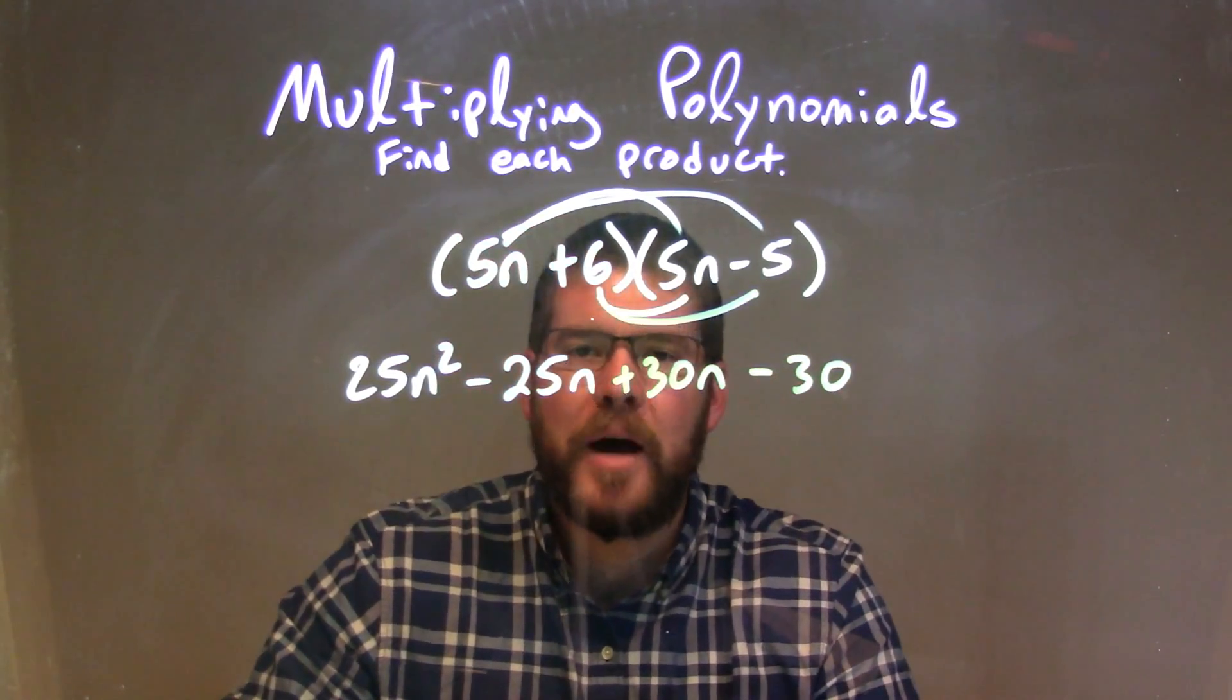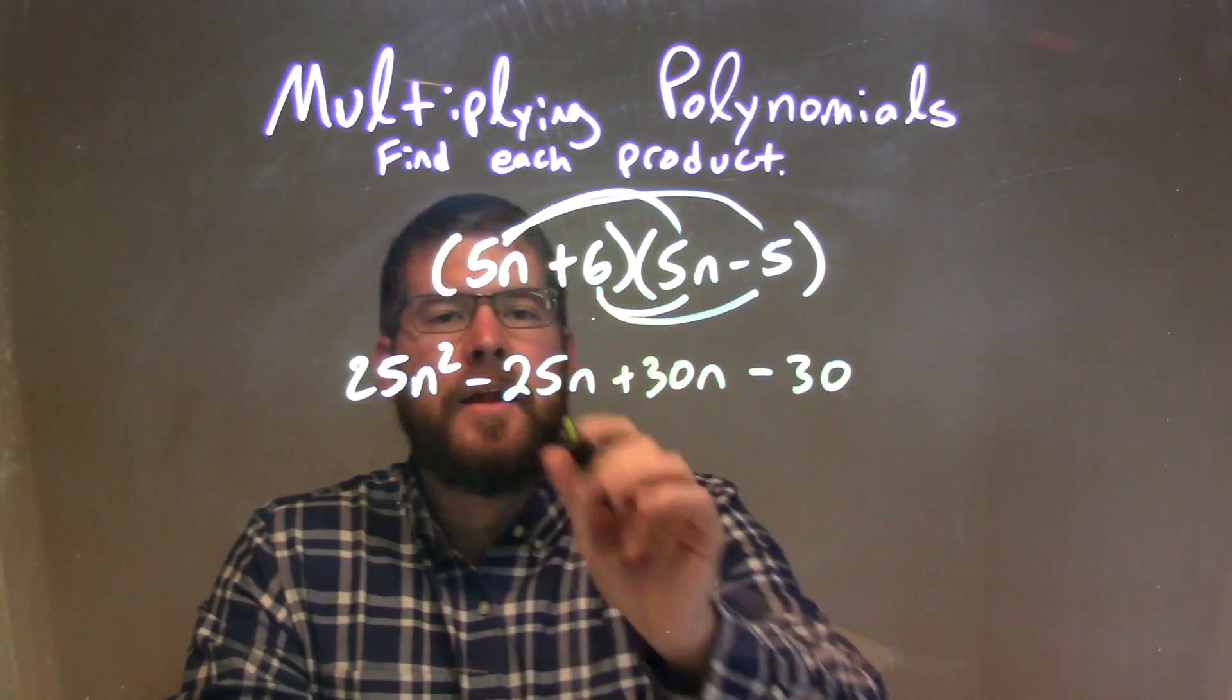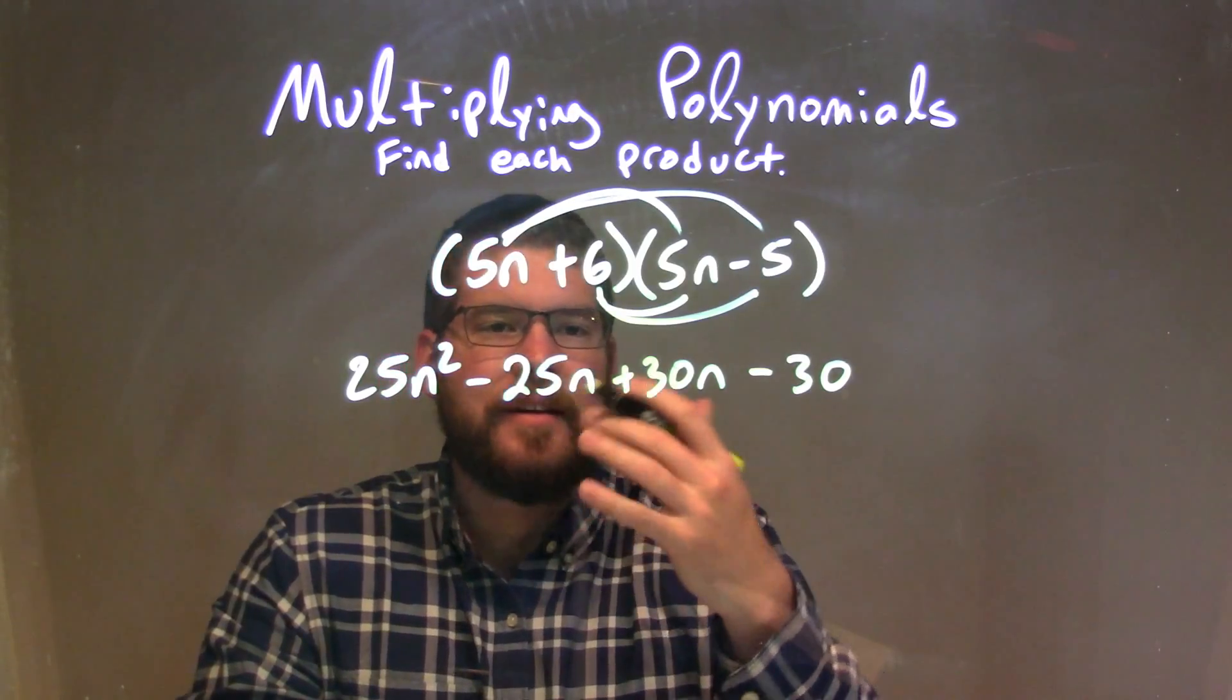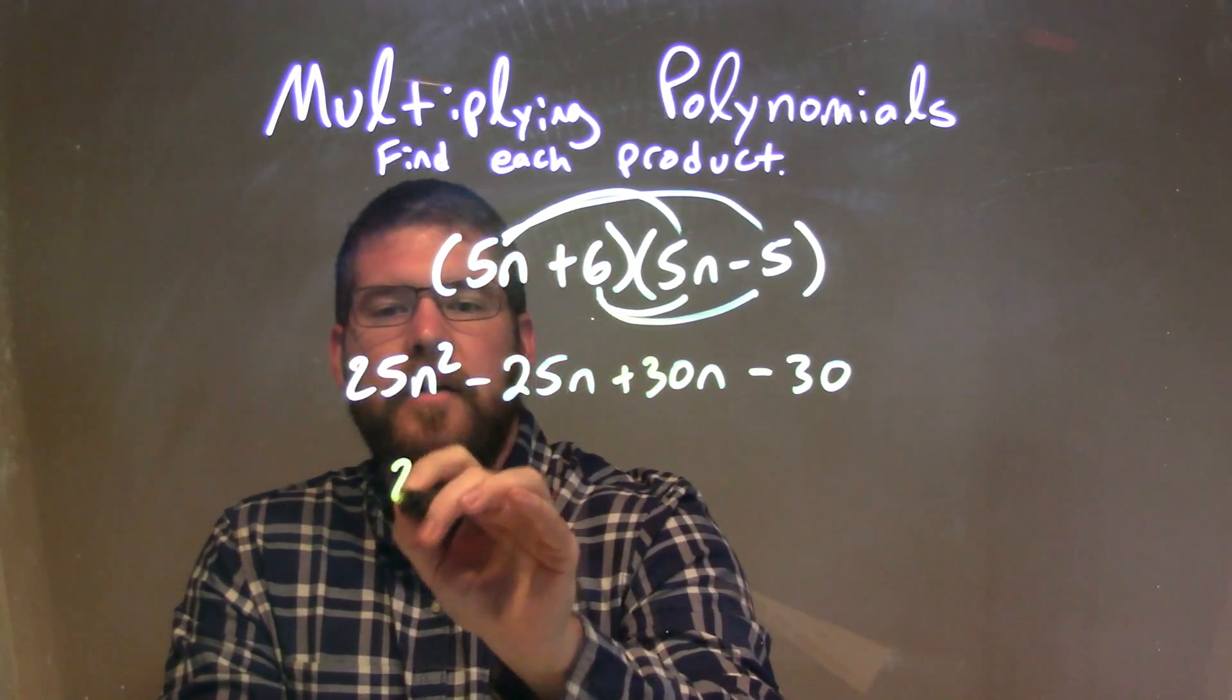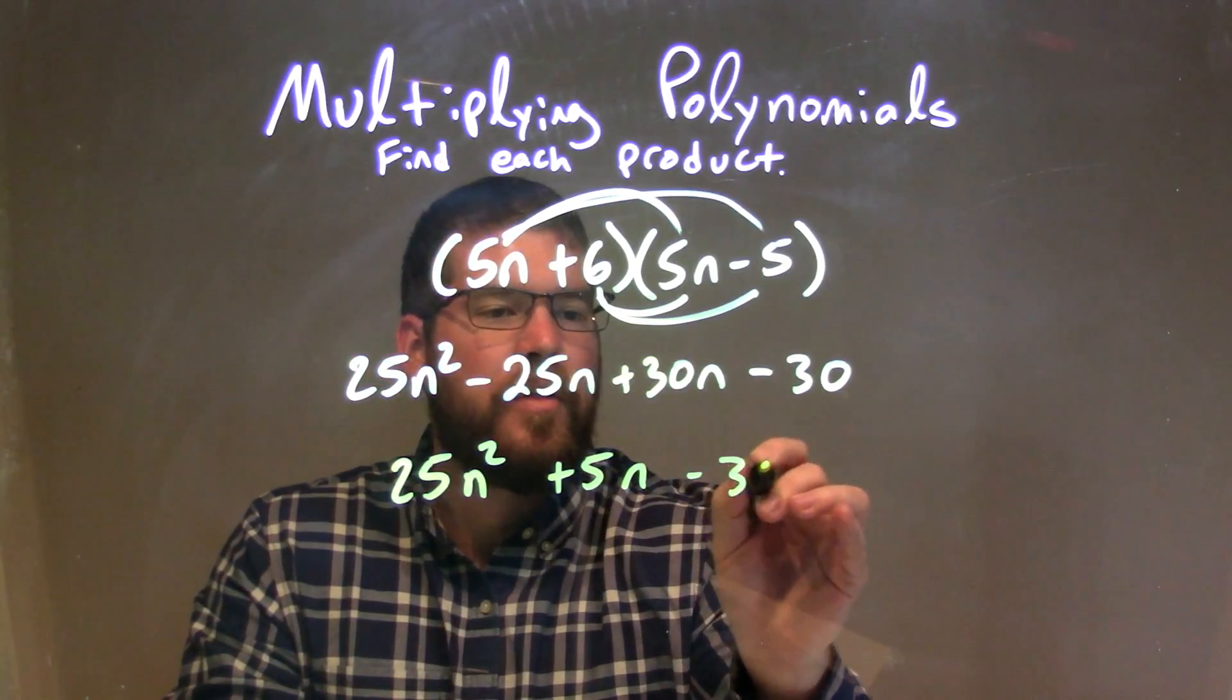So now I'm going to combine my like terms, and it's just the ones with the variable n attached to them. And so we look at it, minus 25n plus 30n is positive 5n. And so my final answer is 25n squared plus 5n minus 30.